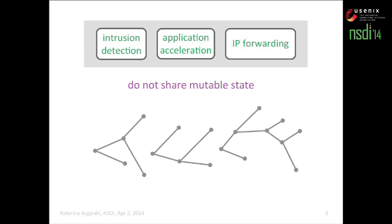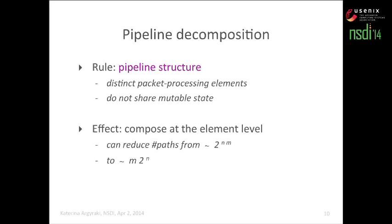To give a quick example: suppose we're trying to prove that this software data plane will never hit a failed assertion. We analyze each element in isolation, and it turns out the third element may hit a failed assertion for some input packet — a problematic branch. That does not mean the entire data plane will also hit this assertion, because in context the problematic branch in the third element may never be reached. So we start from the problematic branch and work backwards to find a path through the data plane that reaches that statement. If we find at least one such path, the data plane may hit a failed assertion and the target property is not satisfied. The rule we impose is that a software data plane must follow pipeline structure with distinct elements that do not share mutable state.